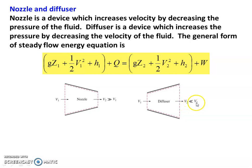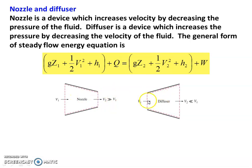In the diffuser, V2 is very much lower than V1. In the nozzle, V2 is very much higher than V1. The diffuser area increases, while the nozzle area decreases — they are opposites. A nozzle is a device which increases the velocity by decreasing the pressure of the fluid. So in the nozzle, pressure decreases and velocity increases.